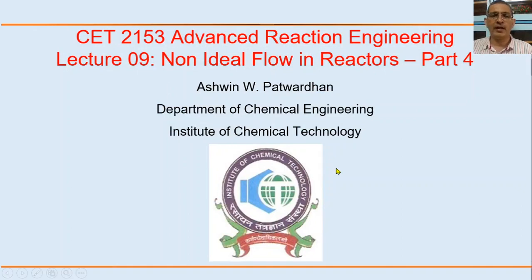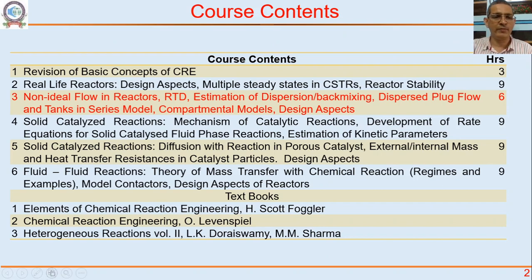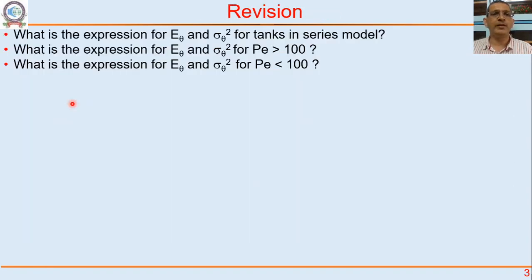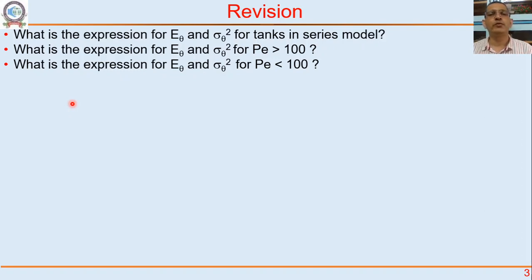How do we analyze real-life reactors? We are on the third part of our course. To quickly help you revise: what is the expression for E-theta and sigma-theta-squared for the tanks-in-series model? What is the expression for E-theta and sigma-theta-squared for Peclet number greater than 100, and for Peclet number less than 100? If you write these expressions it will serve as automatic revision of the previous lecture, and you will be in a better shape to understand what is coming in this lecture.